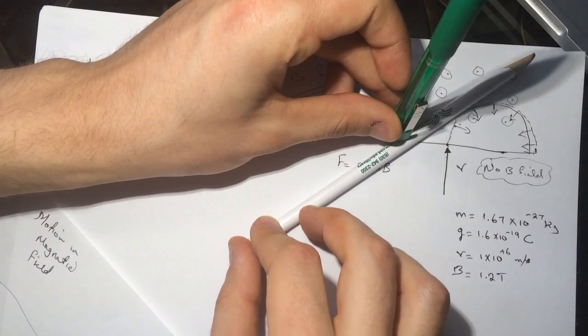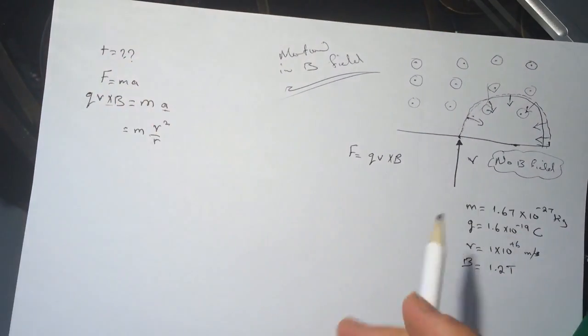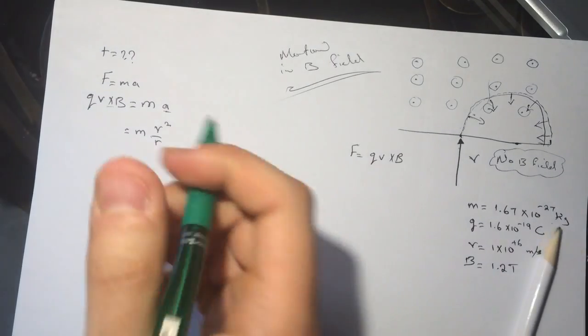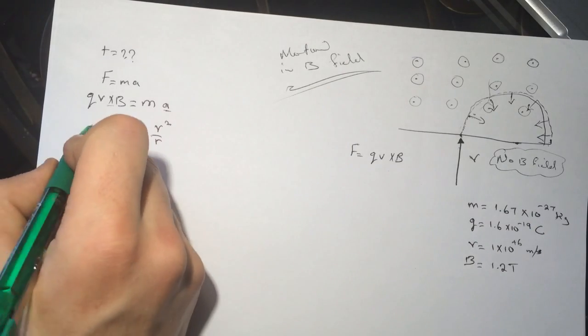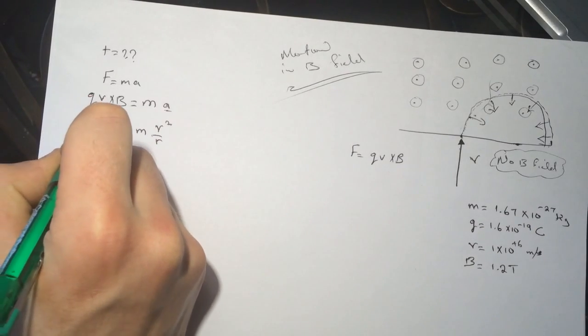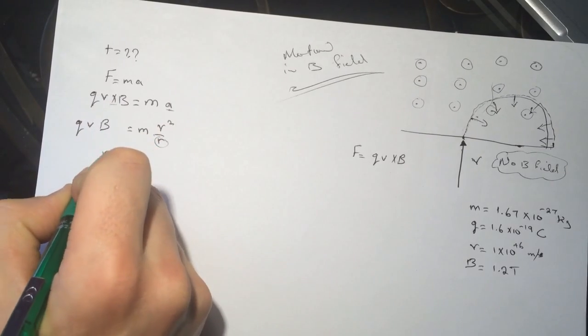Q V B. Alright, so let's get the R. The R is equal to... cross the V, so R is equal to M V over B Q.